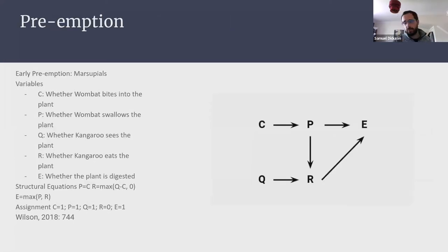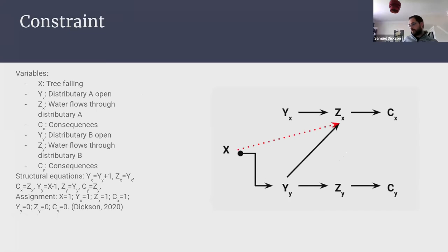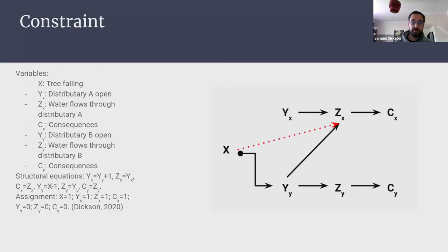We can model quite complex cases where there are multiple streams of interacting counterfactual dependence that supersede each other in different scenarios. We can also model constraint relationships. Imagine a river flowing down a mountain with two distributaries. For whatever reason the river flows down distributary B — until one day a tree falls and blocks distributary B, making it impossible for water to flow that way.